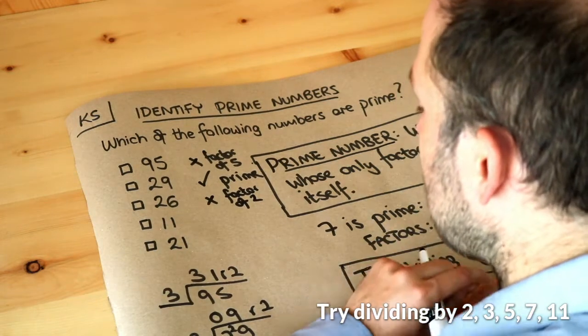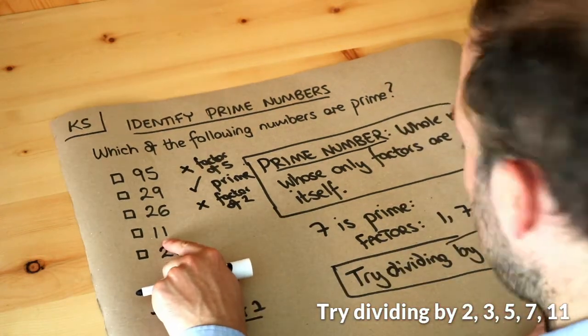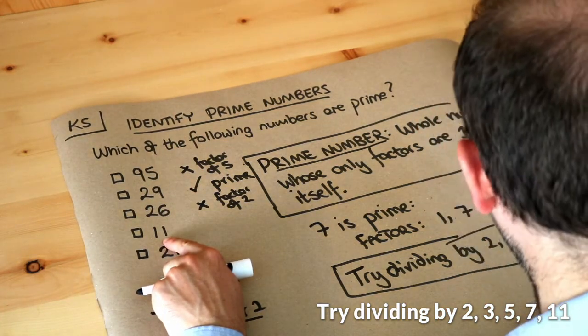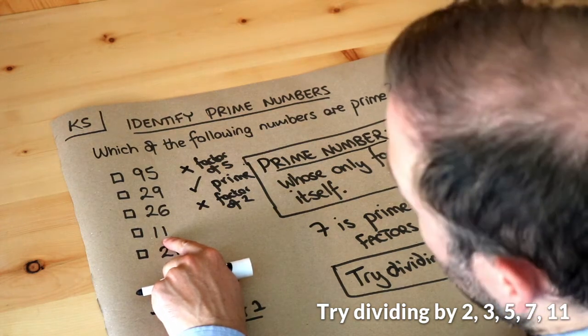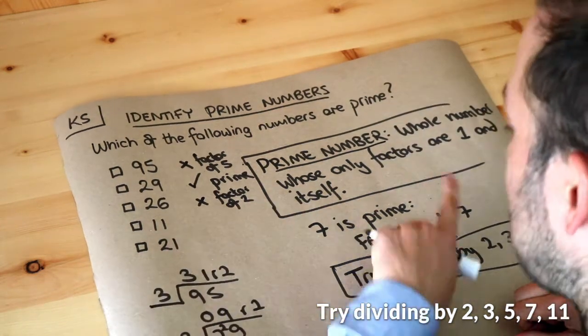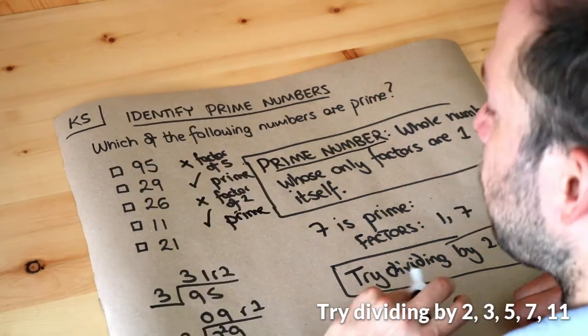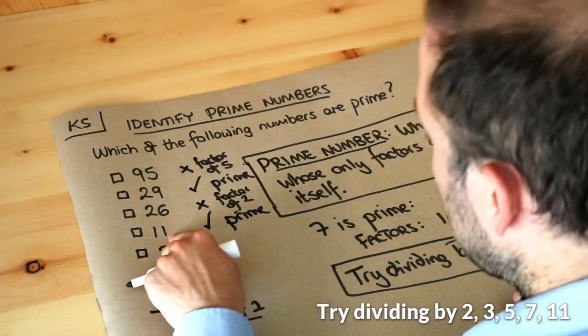What about 11? Does 11 divide by two? No, it's odd. Does it divide by three? Is 11 in the three times table? No. Is 11 in the five times table? No. Is it in the seven times table? No. Well, 11 divides by 11, but that's itself, so 11 is prime. Remember, a prime number still has factors of one and itself, so 11 does divide by 11, but it's itself so it doesn't count.